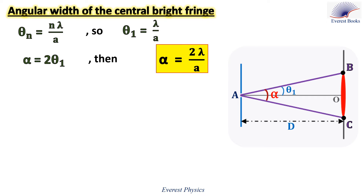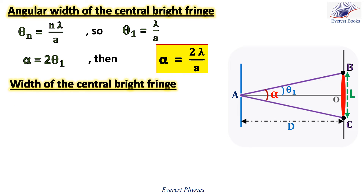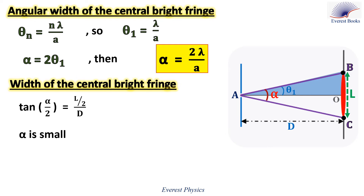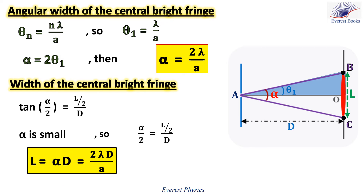Now let's find the width L of the central bright fringe. Looking at the right-angled triangle IBO, tangent of theta 1 equals (L/2) over D, where L/2 equals OB. Since diffraction angles are small, we can replace tangent of (alpha/2) by alpha/2. Rearranging gives L equals alpha times D. Replacing alpha by 2*lambda over a, we get L equals 2*lambda*D over a.